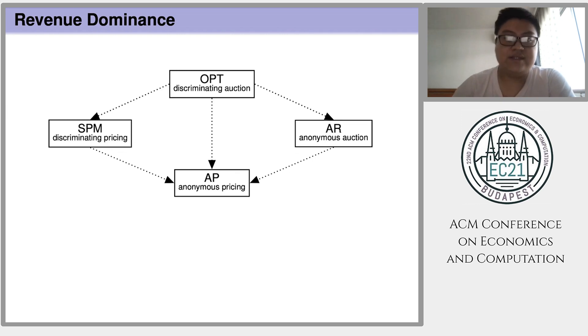Here, an arrow goes from a mechanism with higher revenue to another mechanism of lower revenue. Notice that SPM and AR, those two mechanisms have different structures, so they are not comparable.